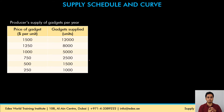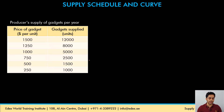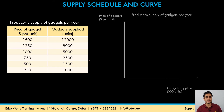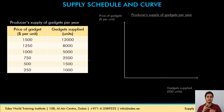On the left side, we have the price of the gadget. At different prices, the quantities that all the producers together are willing and able to supply are given in the right column — gadgets supplied. Similar to the demand curve, the y-axis shows the prices of gadgets per unit, and the x-axis shows the gadgets supplied in 1000 units. We've also labeled our graph on top: 'producers supply of gadgets per year.' It is very important to label the graph on top, label your x-axis, label your y-axis, and also label the curves.